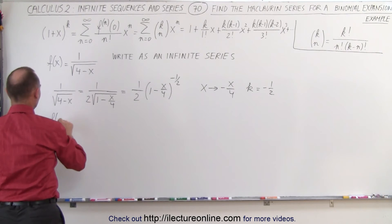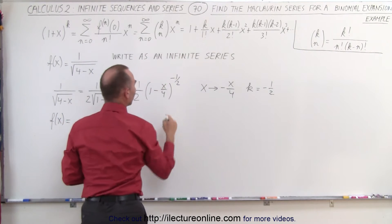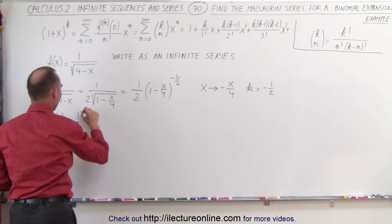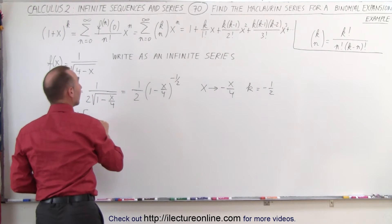So f of x can be written as the expansion so we end up with a 1 but we still have the 1 half in front right here. So we have 1 half times the expansion and so here we have a 1 in the front.